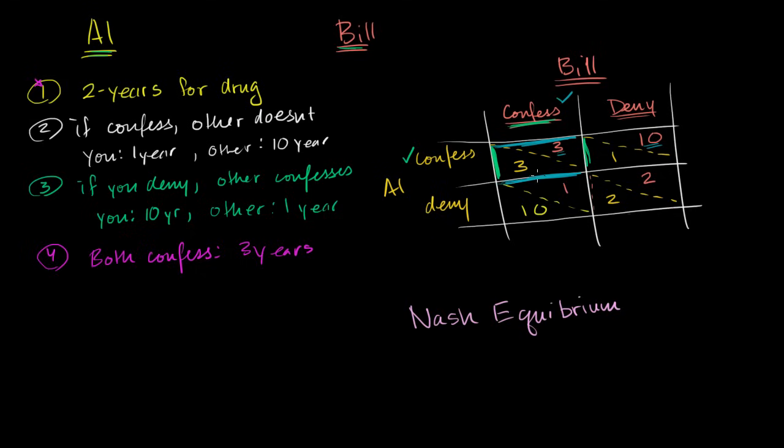And so this is interesting. They're rationally deducing that they should get to this scenario, this Nash equilibrium state, as opposed to this globally optimal state. They're both getting three years by both confessing, as opposed to both of them getting two years by both denying.